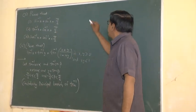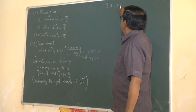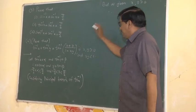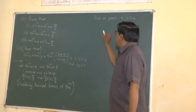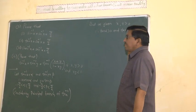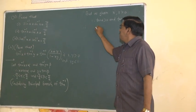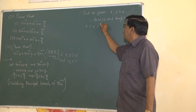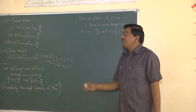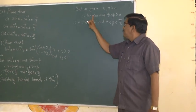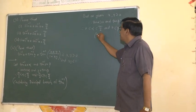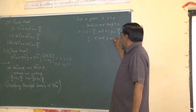But as given, x and y are positive. Therefore, tan alpha is positive and tan beta is positive. Therefore, alpha and beta are positive numbers because alpha and beta are in the first quadrant.